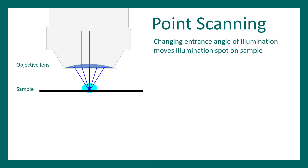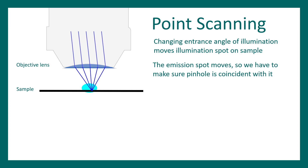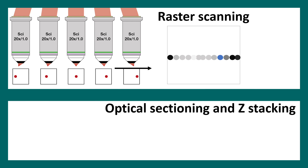Confocal microscopy uses a point scanning method, where the laser is steered to different points across the specimen plane, building the image point by point, line by line. This is known as raster scanning. The diagram shows how the laser steers through different points to construct the final image.